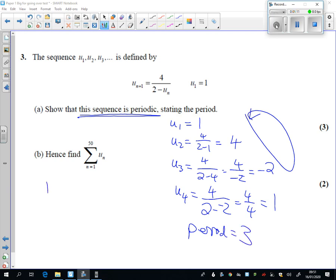So the loop of 3 is 1, add 4, add minus 2. That's 1, 2, 3. And then there's another 1, add 4, add minus 2. That's 4, 5, 6.